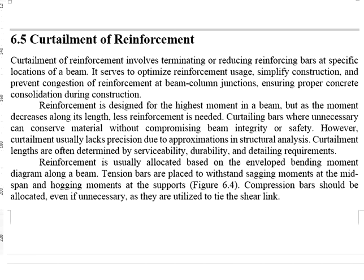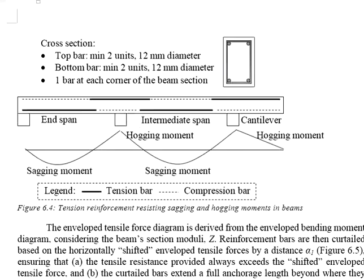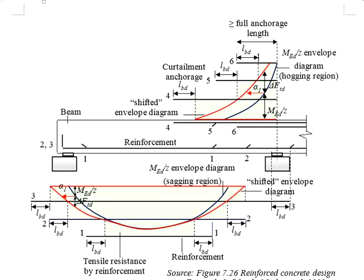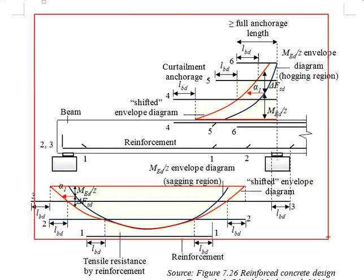or the safety of the structural element. Curtailment is done on the basis of the bending moment diagram of a member. When the required moment resistance reduces along a beam span, the amount of reinforcement can be reduced accordingly. In this video we are going to talk about how specifically we deal with the curtailment of reinforcement, taking this diagram as an example.